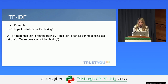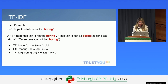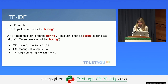To give you an example: let's say we have a document 'I hope this stock is not too boring', and the corpus is composed of that document plus 'This stock is just as boring as filing tax returns' and 'Tax returns are not that boring.' Let's say we want to compute the TF-IDF score of 'boring.' The term frequency is one divided by eight, because there are eight words in our document and boring appears only once. But the inverse document frequency is the logarithm of three divided by three — because all three documents contain boring — so the logarithm of one is zero. The TF-IDF score of boring is also zero.